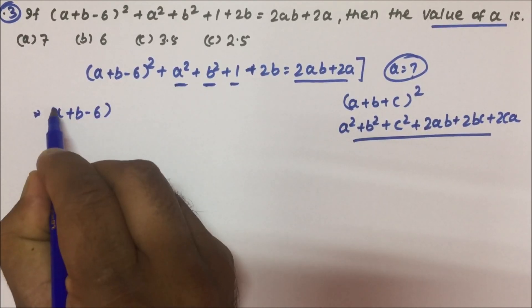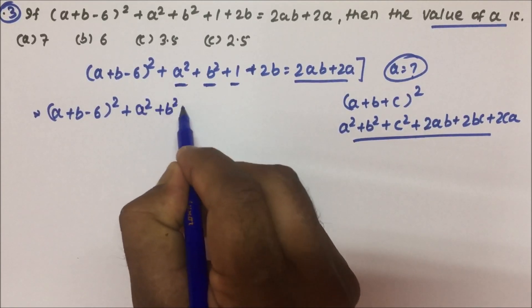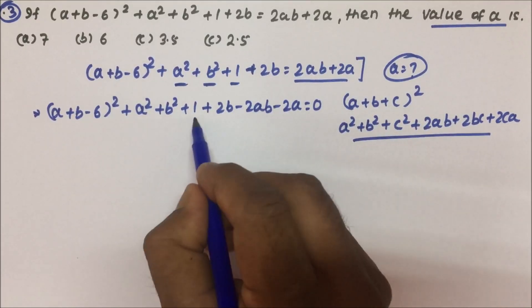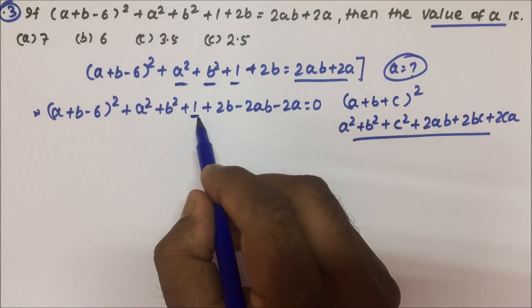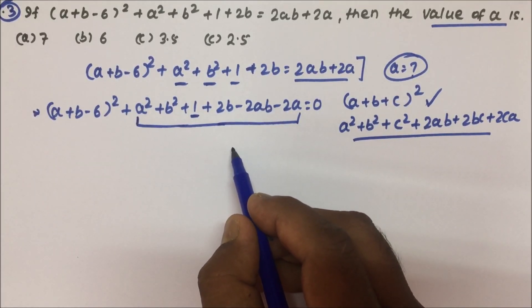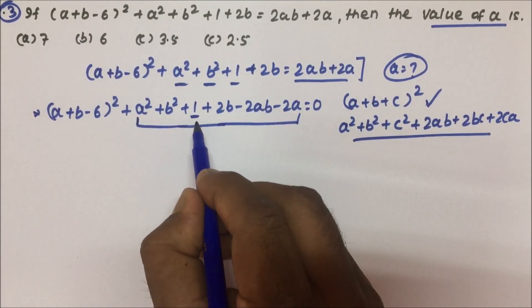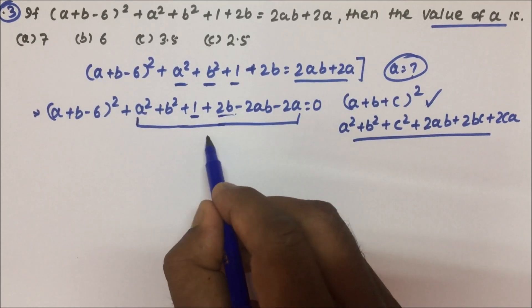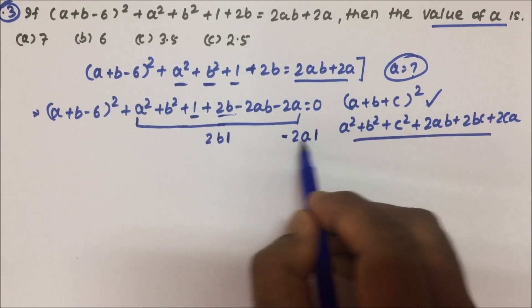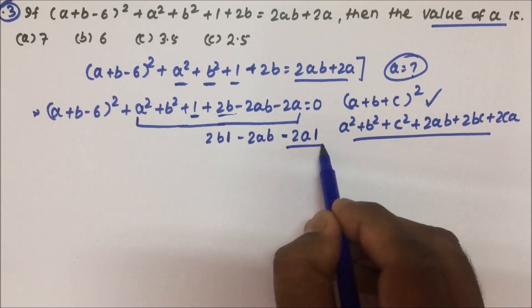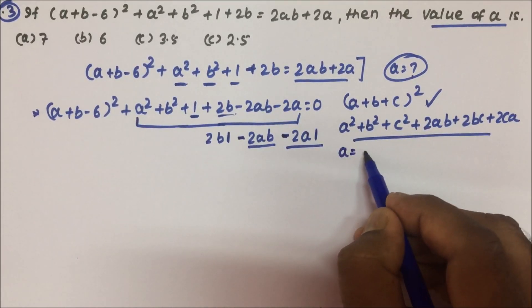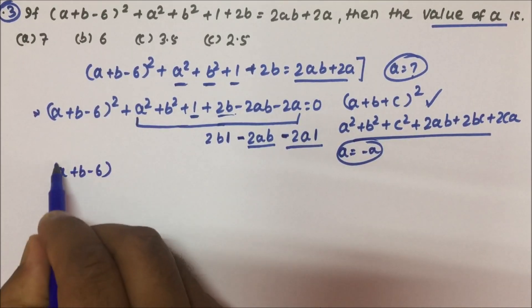Let us bring all terms to the left side: (a + b − 6)² + a² + b² + 1 + 2b − 2ab − 2a = 0. Now, c is either +1 or −1. We need to frame this in the identity form. Here 2b means 2bc where c = 1. For −2a, we have 2ac where c = 1, but a is negative here. And we have −2ab. So it is very clear that a is to be treated as −a.